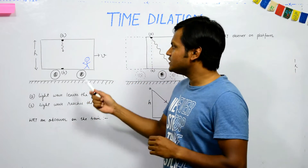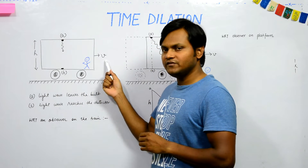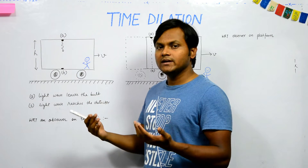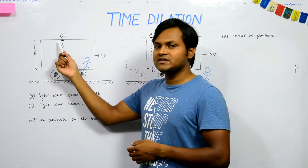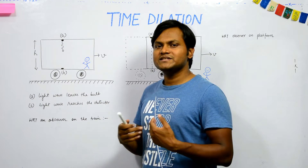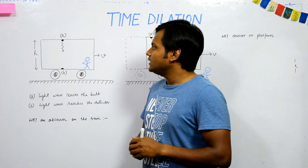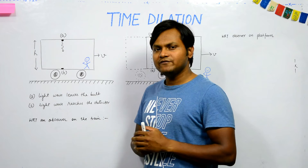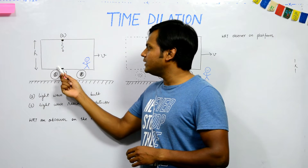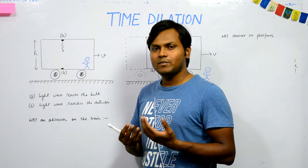Let's imagine there is a train moving at a certain velocity v in a particular direction. Inside the train there is a setup: in the ceiling there is a bulb which can emit light, and right below at the floor there is a detector. We switch on the light for an instant, and the light ray travels a certain distance and reaches the floor where it is detected.